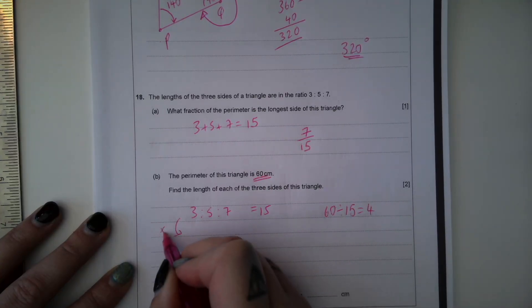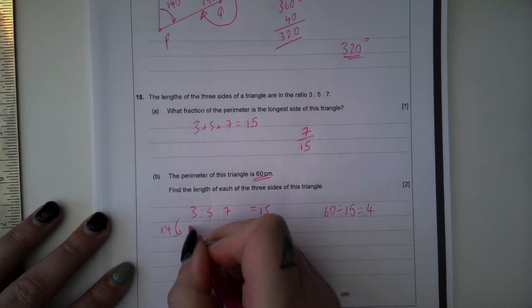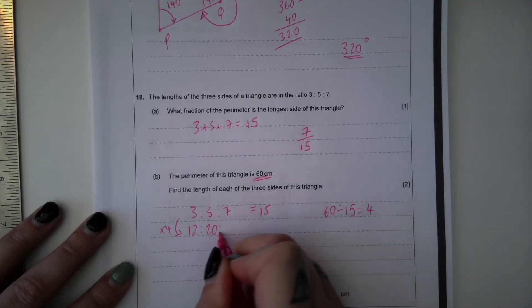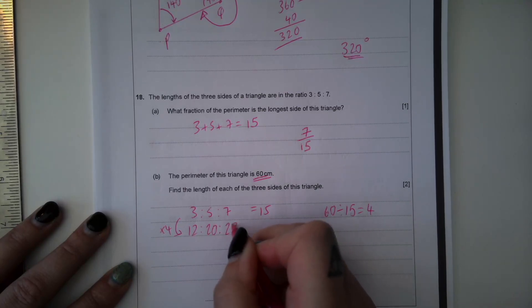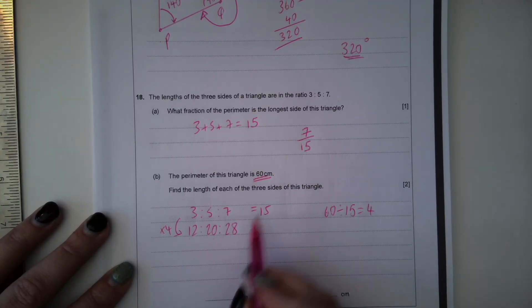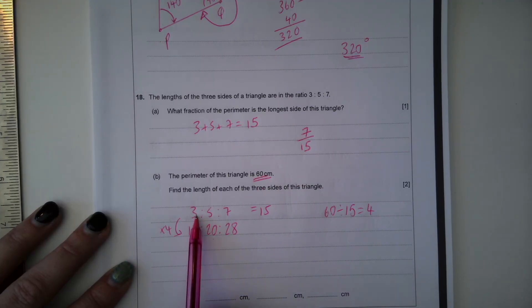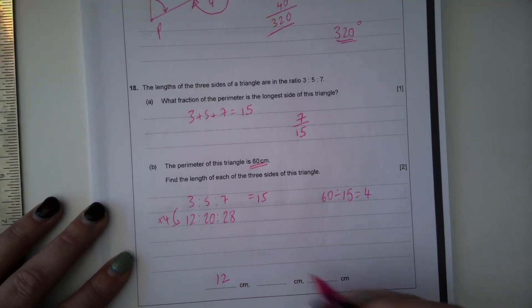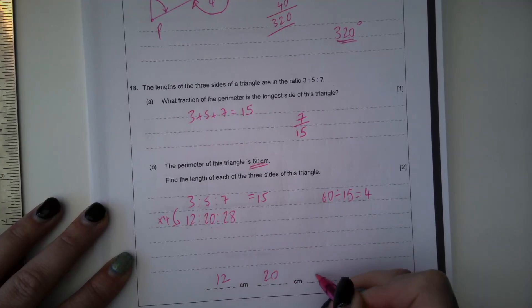And then we're going to multiply each of these by 4. 3 times 4 is 12, 5 times 4 is 20, 7 times 4 is 28, and you can check that they add up to 60. I'm not going to simplify the ratio at this point, so if I do, I'm just going to get back to this answer. These are the actual lengths of the triangle. So we have 12 centimetres, 20 centimetres, and 28 centimetres.